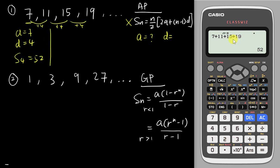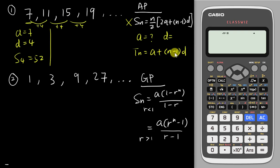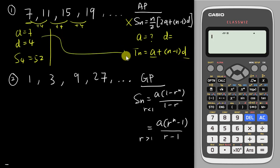If you want the sum of four terms it's quite easy to type in manually, but if you want the sum of, say, 23 terms you're not going to add them one by one. So you need to know the nth term formula for AP, which is a plus (n minus 1)d. This formula is given in the exam so you don't need to worry about memorizing it. What you do is substitute your 'a' and 'd' into this formula and replace 'n' with 'x' because the calculator can only use x. You use the sigma button — press Shift then x.